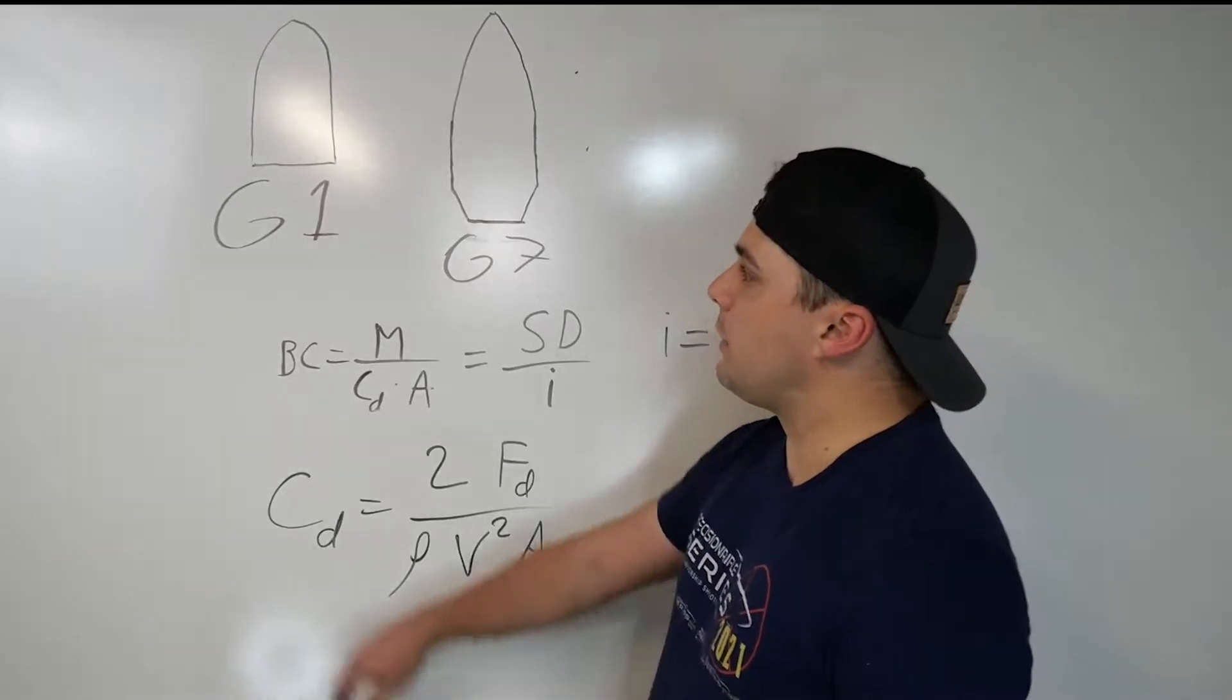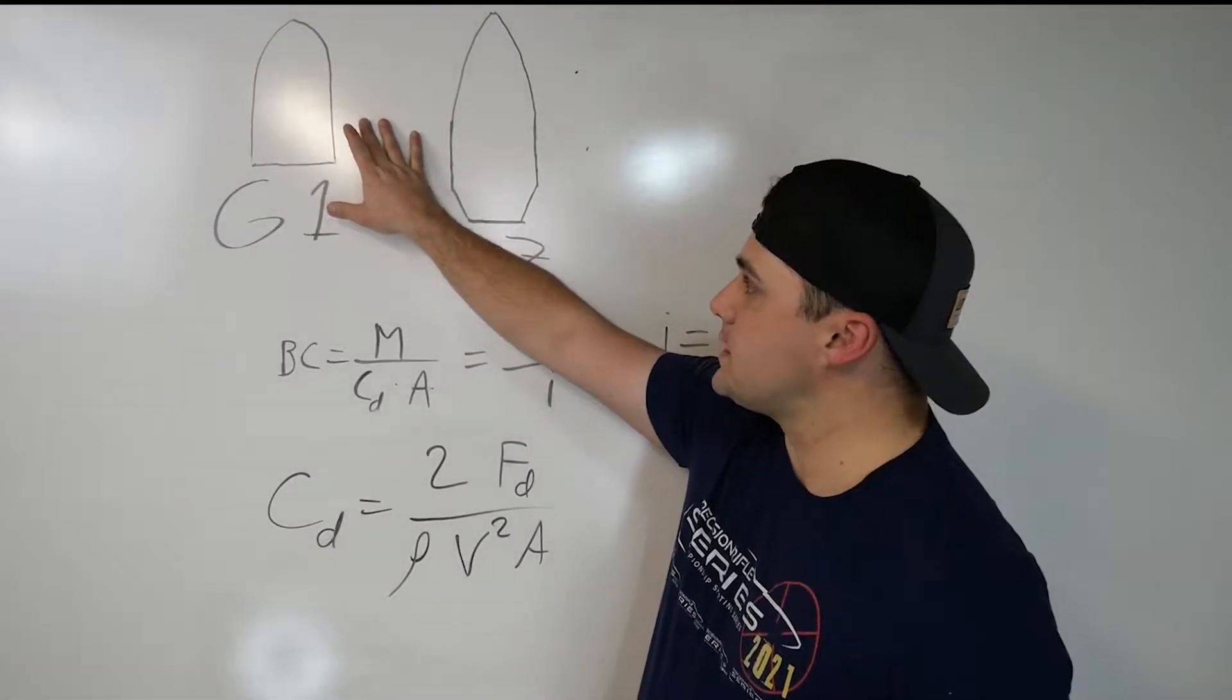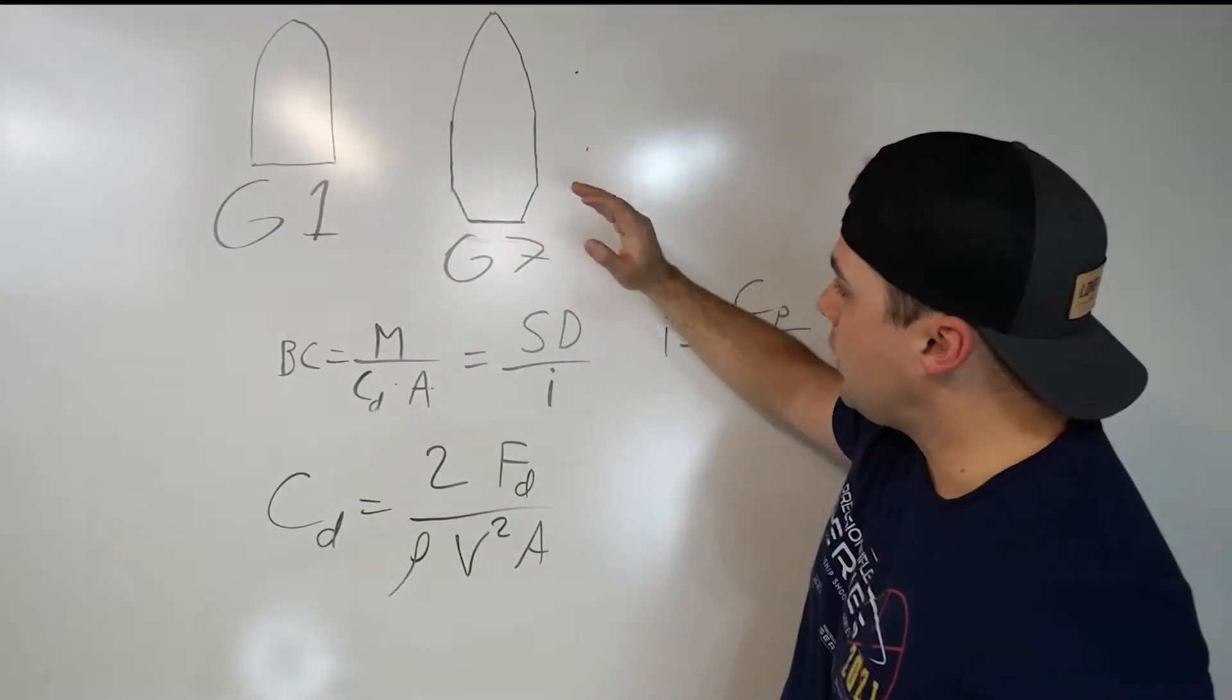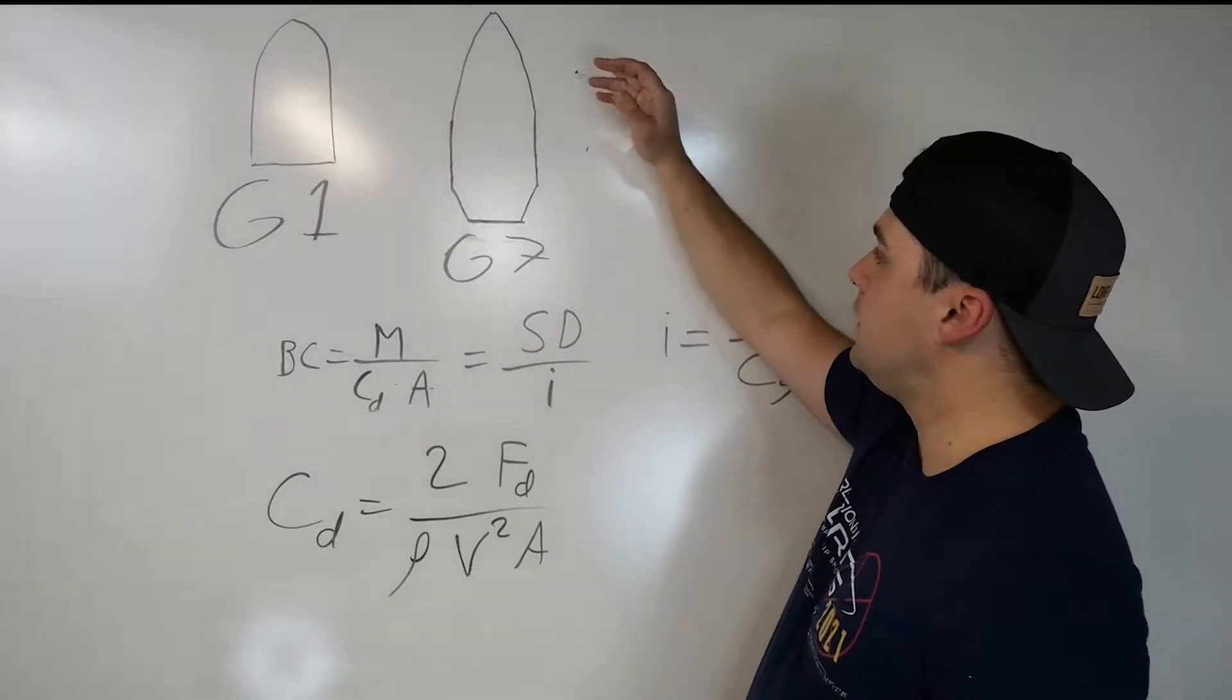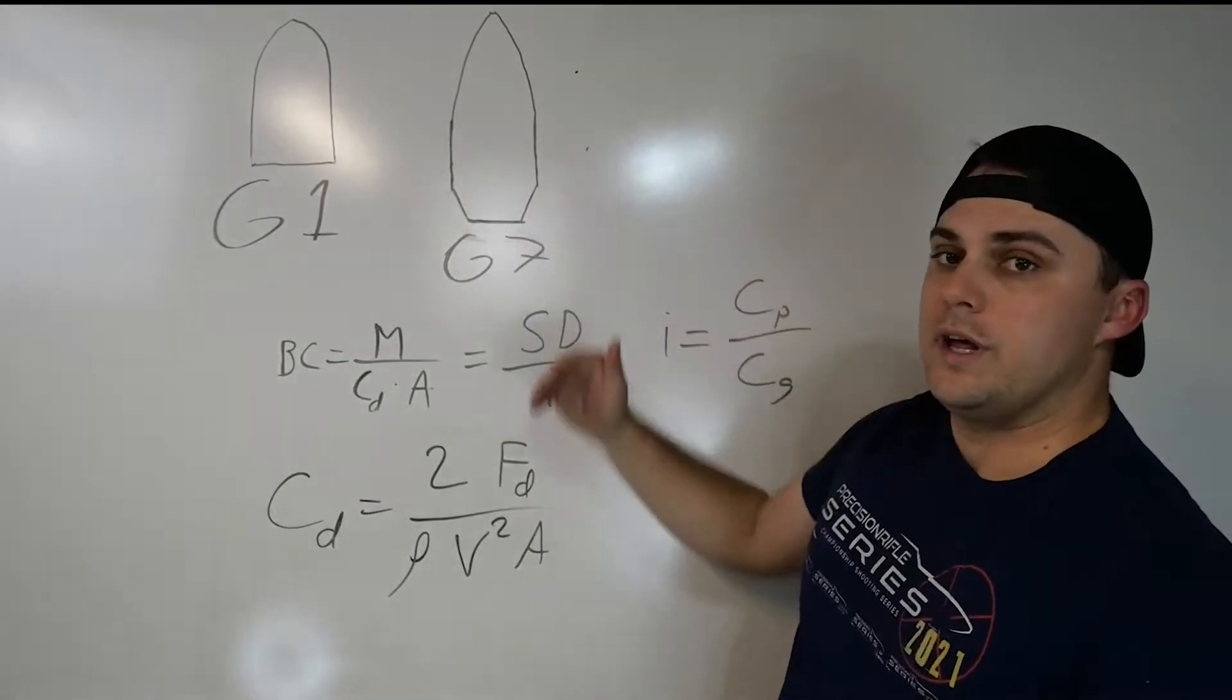So first things first, up here on the board I've got this listed as G1 and this projectile shape. This is kind of your typical flat base round nose bullet. Over here I've got a G7 listed underneath, kind of more of your typical VLD style bullet with your boat tail.